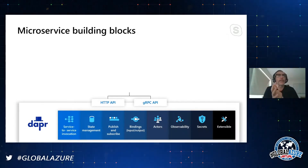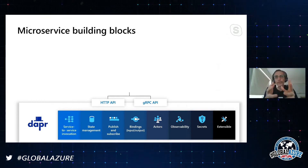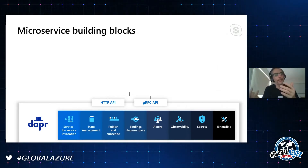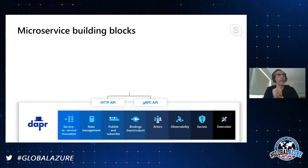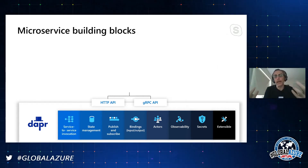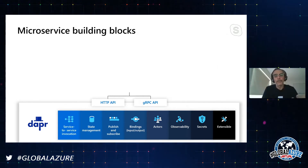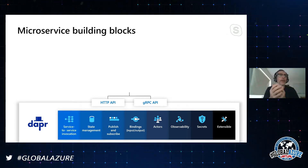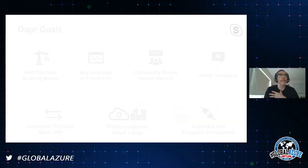At its heart, DAPR has this concept of a building block — an API that gives you some capabilities. For example, you can call from one service to another through service invocation, and it will do the discovery of where the service is, handling hard problems like retries and circuit breaking as well as service discovery.